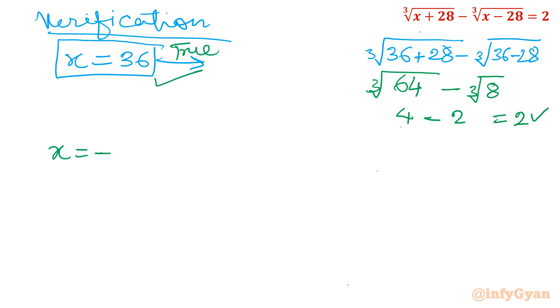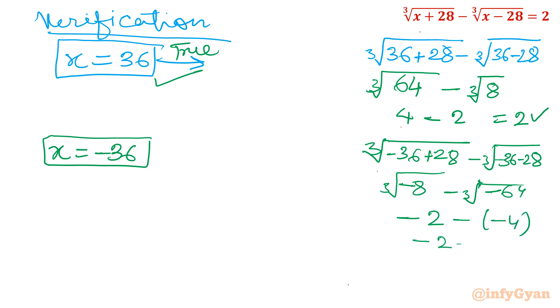Now come to second value minus 36. Same job. I will write here cube root of minus 36 plus 28 minus cube root of minus 36 minus 28. Minus 36 plus 28 is minus 8, cube root. This is minus 64, cube root. Now we know that it is minus 2 and this value is cube root of minus 64 is minus 4. So minus 2 plus 4 which is plus 2, true. That means this value is also true.